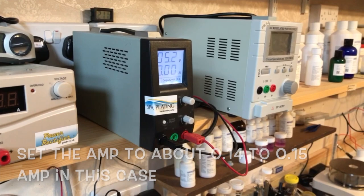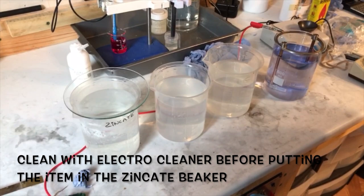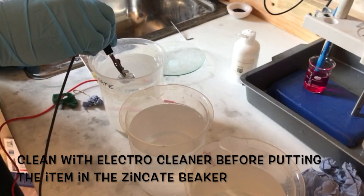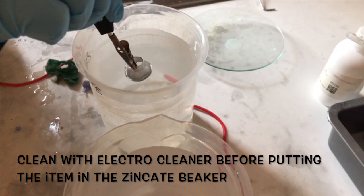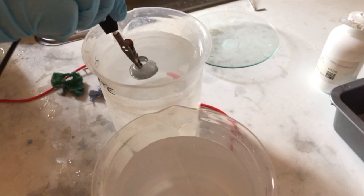First of all, electro cleaning with electro cleaner. I don't show this in this video, but you just put it in a beaker. Electro clean for 32 seconds to a minute, then rinse with deionized water. Then put it in the zinc-ate solution.